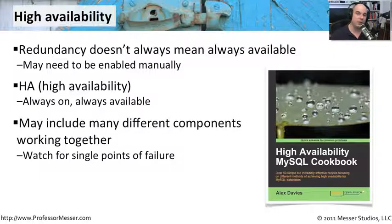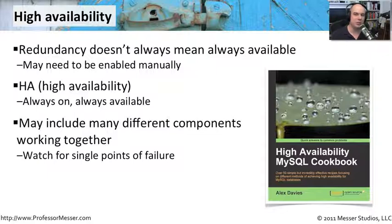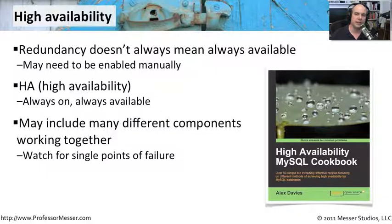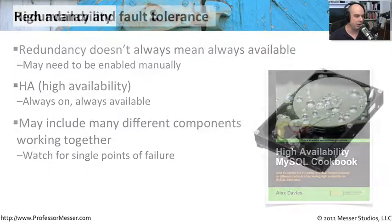There may be many different components working together to achieve high availability. You may have multiple wide area network connections with multiple routers, multiple firewalls, multiple switches going to multiple servers, all working together in conjunction. Each one of those sections would be set up for high availability so that if any particular one failed, all of the other components can work together to keep the resources up and running in your organization.